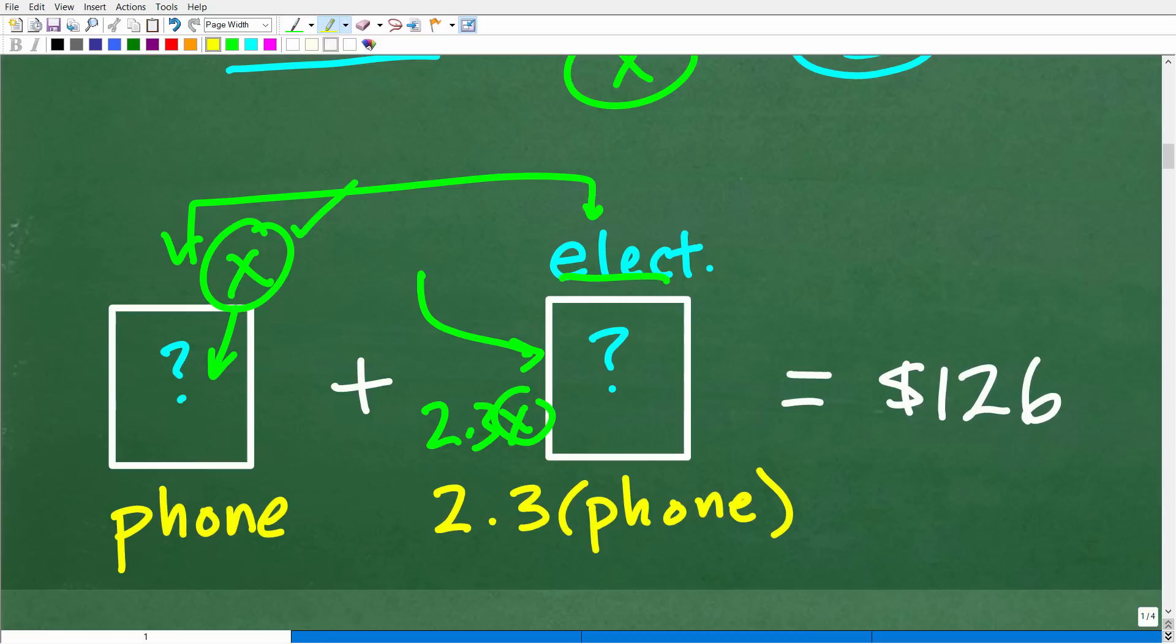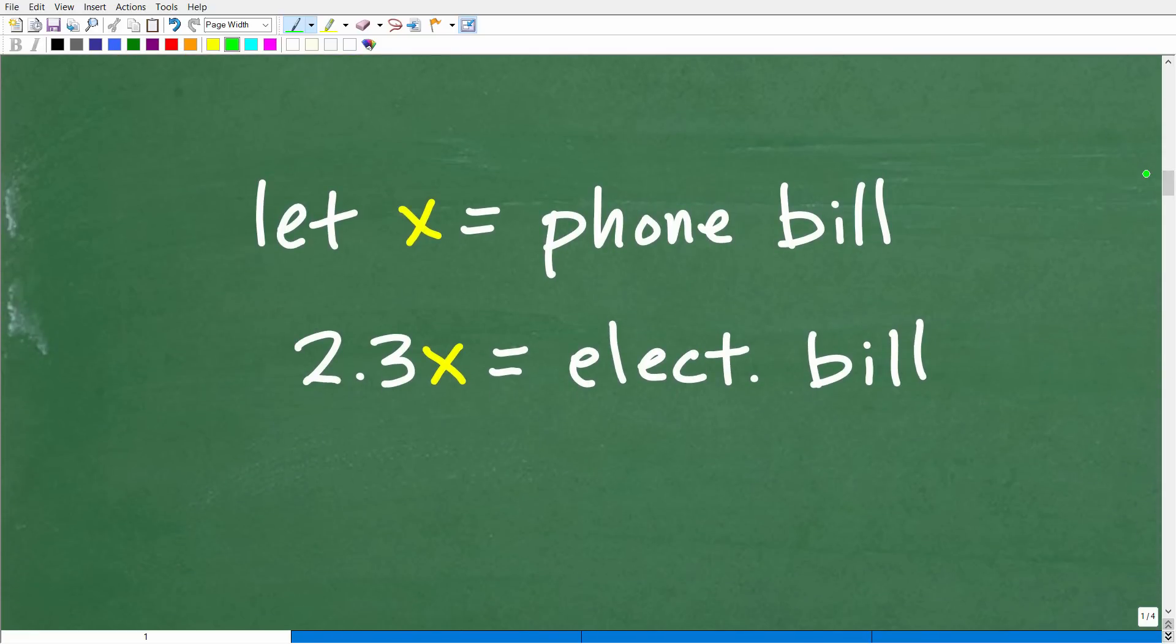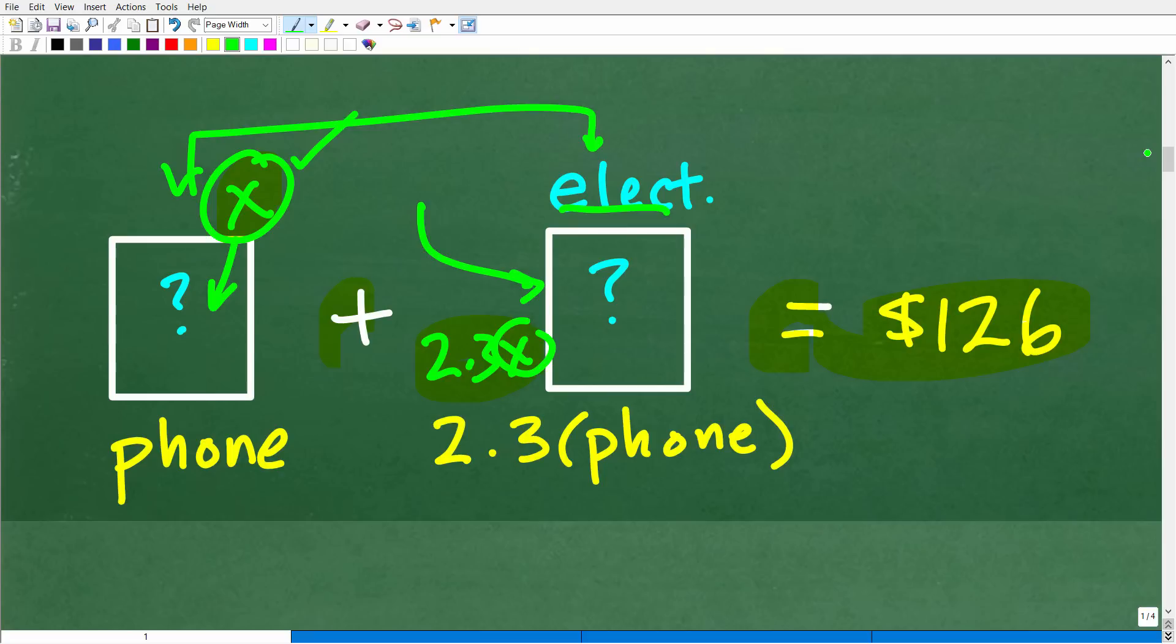And you can see here, we have the makings of a formula. x plus 2.3x is equal to 126. And, of course, anytime we have a variable, like a variable x, we need an equation to solve for that variable. So let's go ahead and be precise about this. And we'll go ahead and say that the variable x equals the phone bill, okay, the cost of the phone bill or the actual amount. So going back up to our model, just so we're not confused or anything, well, we'll go ahead and let x equal the phone bill. It's certainly easier to let the variable represent the phone bill and not the electric bill. And you could, right, you could be like, okay, x is equal to the electric bill. But if you're saying that, then we have to do some division to figure out what the phone bill is. And we don't want to do that. We want to make it easier on ourselves.